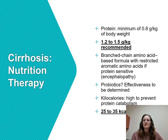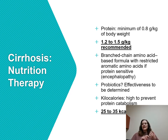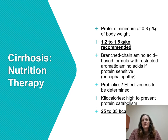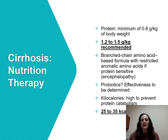With cirrhosis, we focus on protein, recommending 1.2 to 1.5 grams per kilogram of body weight. We also use branched-chain amino acids — leucine, isoleucine, and valine. Branched-chain amino acids bypass liver metabolism, which is really important because in cirrhosis the liver is not functioning properly with ammonia buildup. The branched chains can be used as protein, surpassing the liver, with no metabolism involved, and can be utilized by cells rapidly.